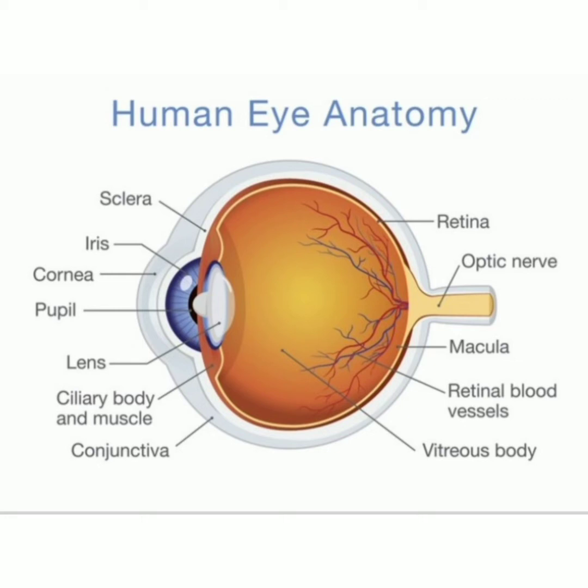The aqueous humor helps to shape the cornea and provide nourishment to the eye, which means it helps to secure our eyes. Next, I will talk about the iris and pupil.